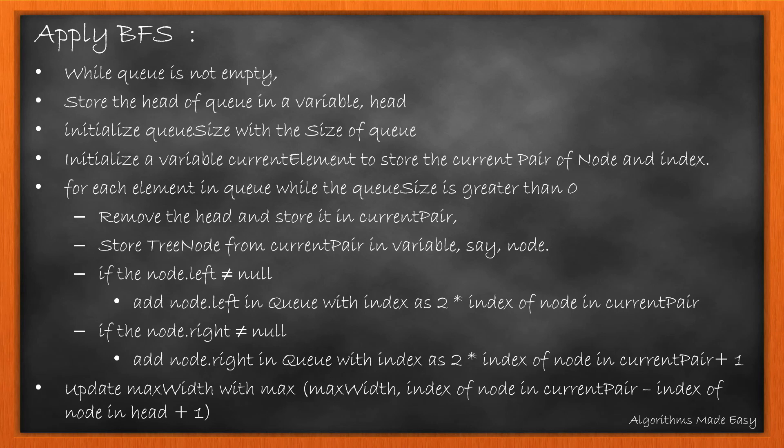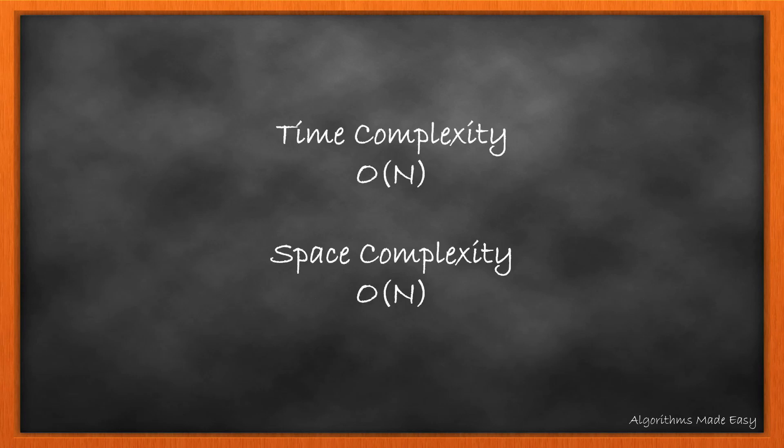we remove the head of the queue and store it in current pair. We store the tree node from the current pair in a variable, say node. If node.left is not equal to null, we add node.left in queue with index as 2 multiplied by index of the node in the current pair. If node.right is not equal to null, we add node.right in queue with index as 2 multiplied by index of node in current pair plus 1. At the end, we update max width with max of max width and index of node in the current pair minus the index of node in head plus 1. Time and space complexity for this method is O(n).